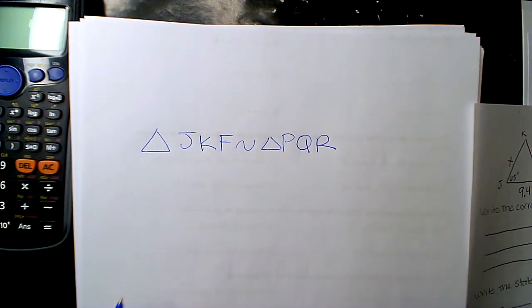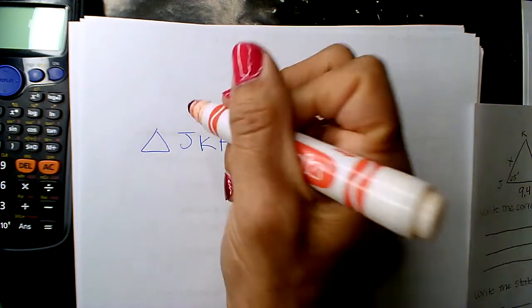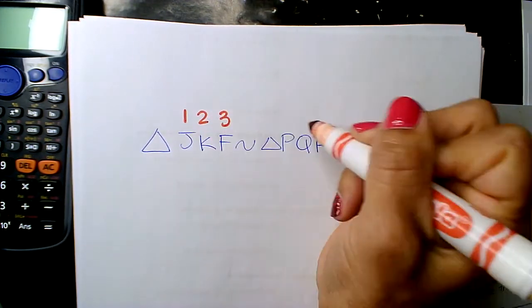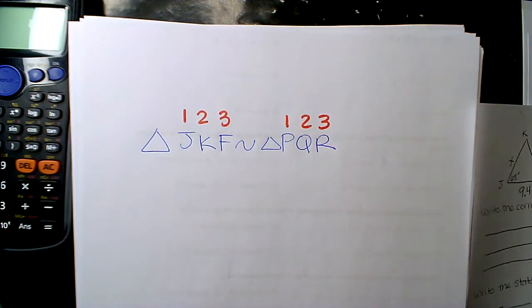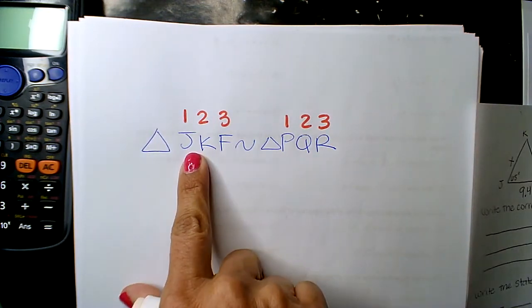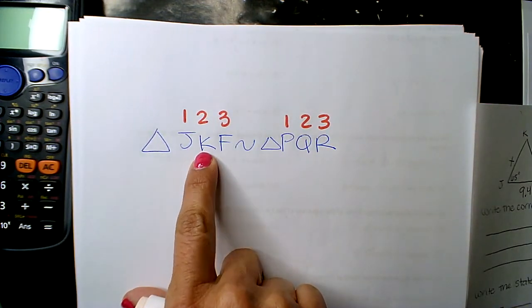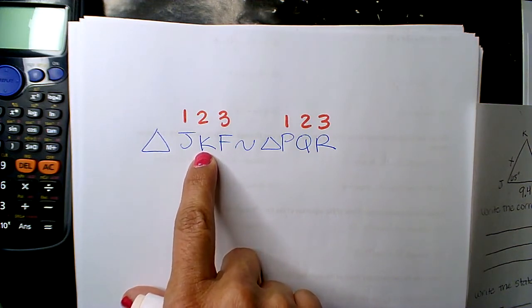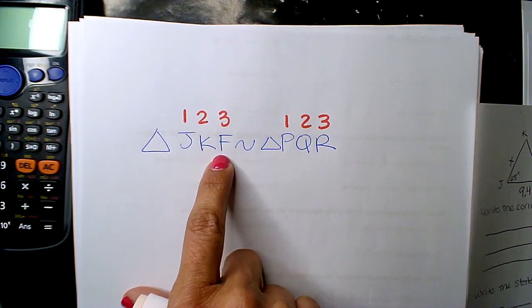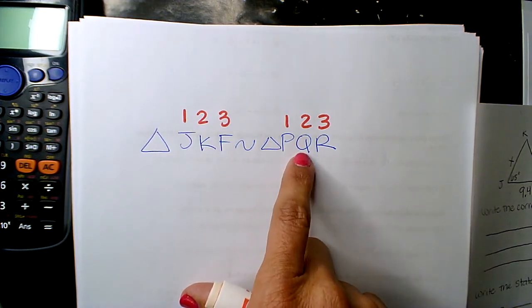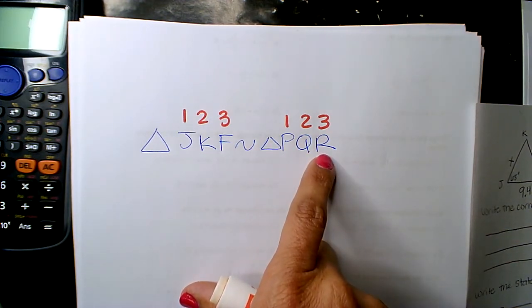The order matters. Okay, but to simplify it because we're so good with numbers, one, two, three, one, two, three. J is the first letter or vertice. K is the second letter or the second vertice. F is the third, same. P is the first, Q is the second, R is the third.